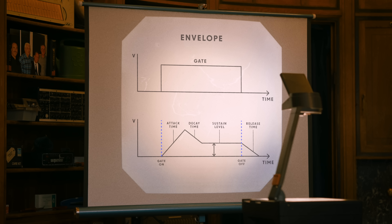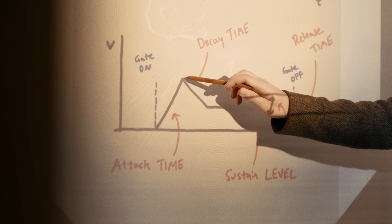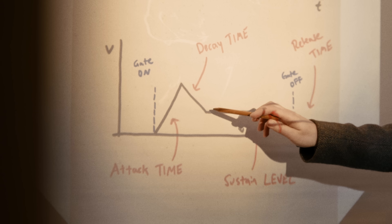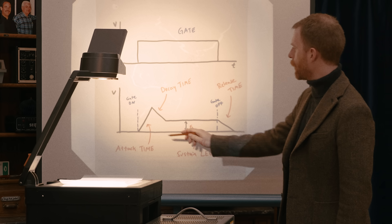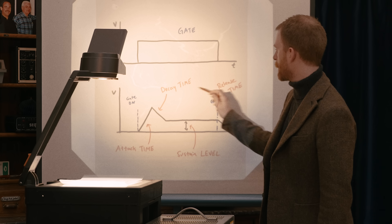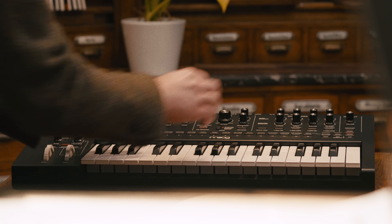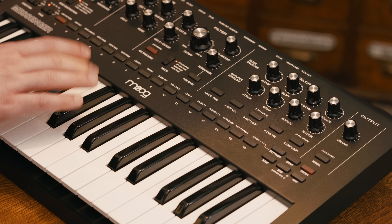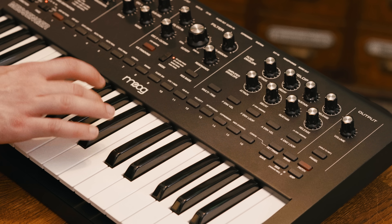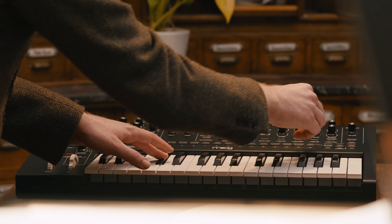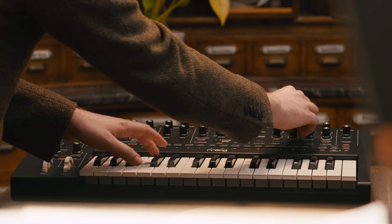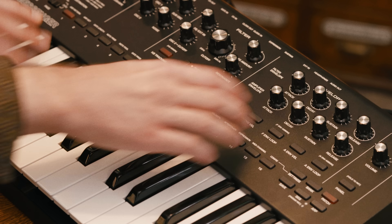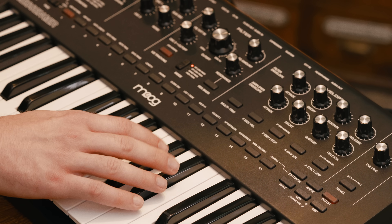Next, we have the decay and sustain controls. The note will sustain for as long as the gate is held open, but we can set the level at which the note sustains with the sustain level control. The voltage will die off from its peak at eight volts at the end of the attack phase to the sustain level at a time set by the decay time control. This way, we can program a distinct onset phase of our note which is different from its sustained character. With sustain at max, the note will sustain at its full level, or we can bring it down to about 50%, or turn sustain all the way down for no sustain — giving us percussive plucked sounds. Decay sets the decay time, either instant or a slow gradual die-off to the sustain level, combining with sustain to give more nuance to our note shapes.